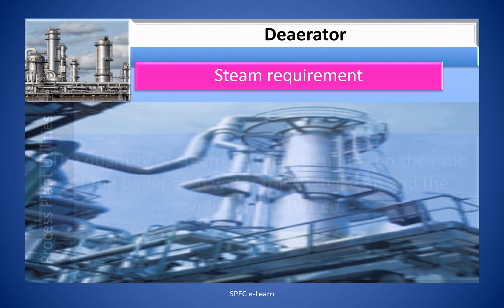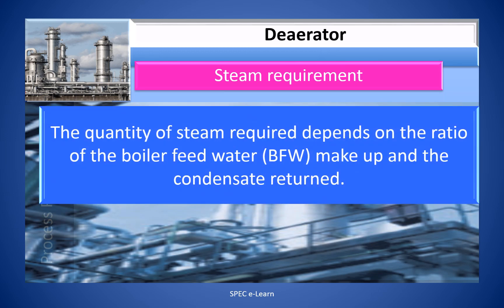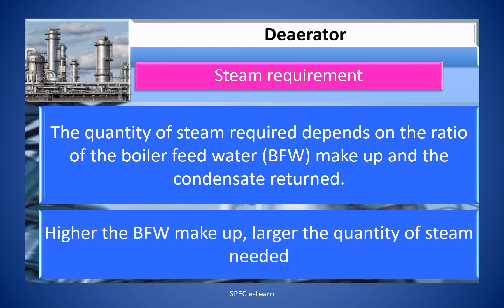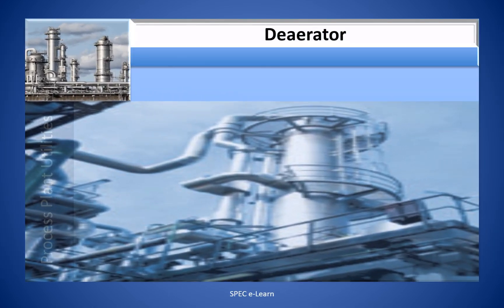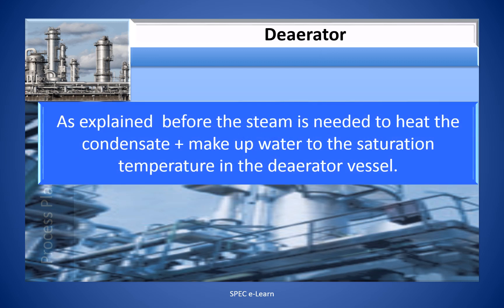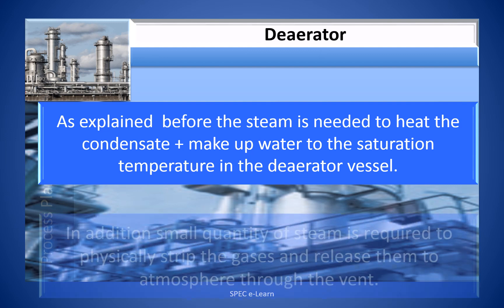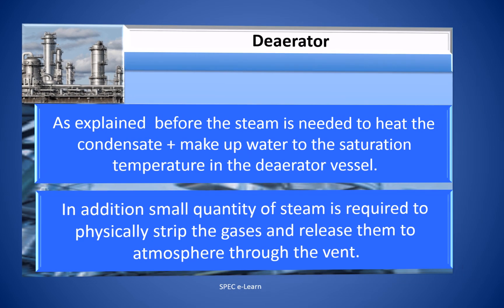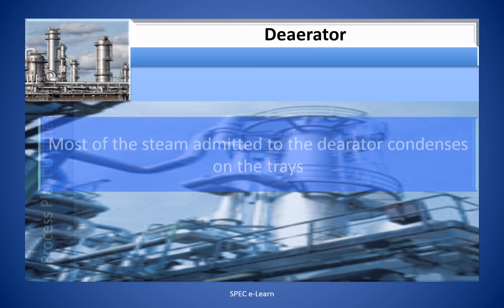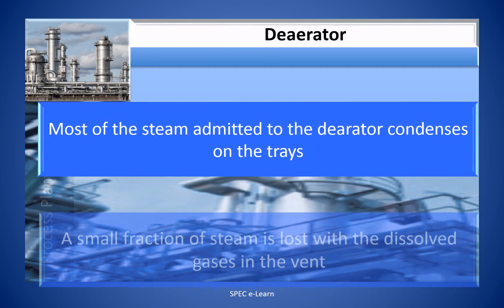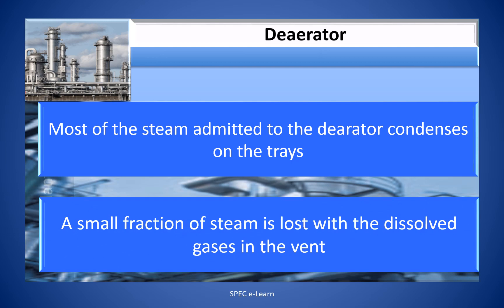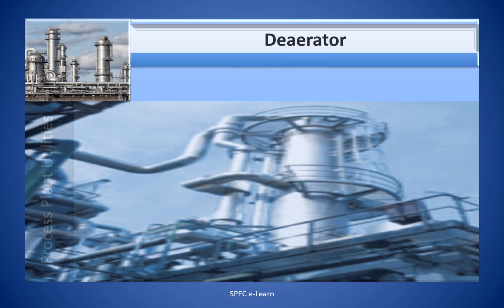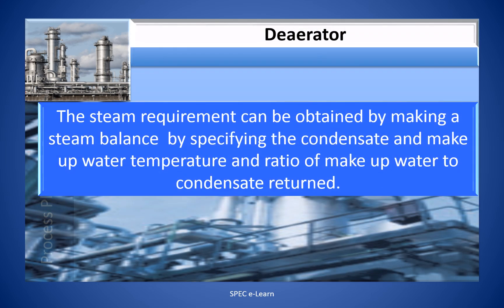Steam requirement: the quantity of steam required depends on the ratio of boiler feed water makeup to condensate returned. Higher the boiler feed water makeup, the larger the quantity of steam needed. The steam is needed to heat the condensate plus makeup water to the saturation temperature in the de-aerator vessel. In addition, a small quantity of steam is required to physically strip the gases and release them to atmosphere through the vent. Most of the steam admitted to the de-aerator condenses on the trays, and a small fraction is lost with the dissolved gases in the vent. Steam requirement can be obtained by making a steam balance, specifying the condensate and makeup water temperature and the ratio of makeup water to condensate returned. If the de-aerator system receives return condensate at high pressure, it will generate some quantity of flash steam. The flash steam generated should be subtracted, and the steam lost with non-condensables in the vent should be added.